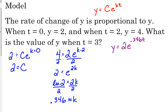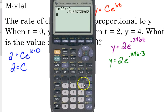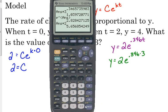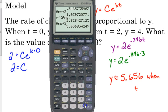So when they want to know what's the value of y when t is 3, we can plug in 3. I have that in my calculator, so I'm just going to use it, times 3 e raised to that power times 2. So y is approximately 5.656 when t equals 3.